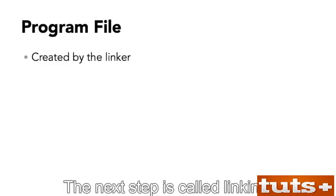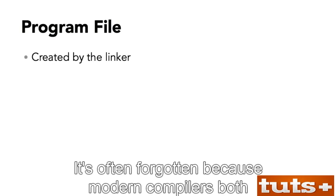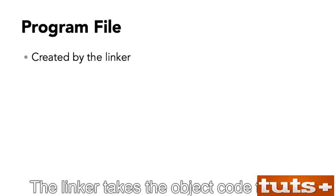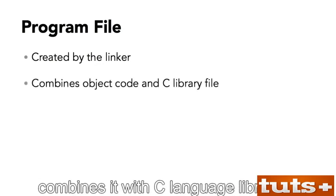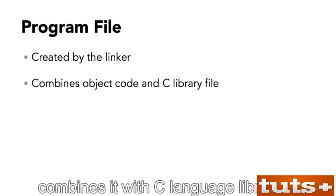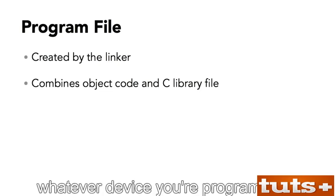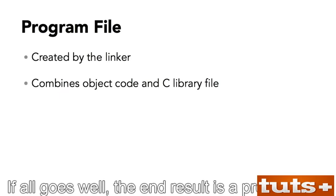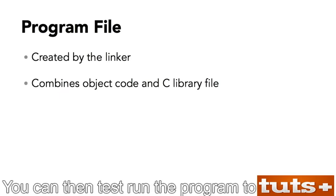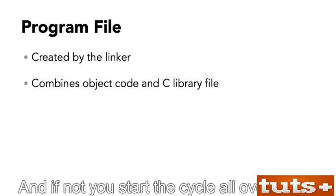The next step is called linking. It's often forgotten because modern compilers both compile and link, but linking is really a separate step. The linker takes the object code file and combines it with C language libraries. The libraries are the workhorse of the language — they contain routines or functions that control whatever device you're programming. If all goes well, the end result is a program file. You can then test run the program to make sure that it works the way you want it to. If not, you start the cycle all over again.